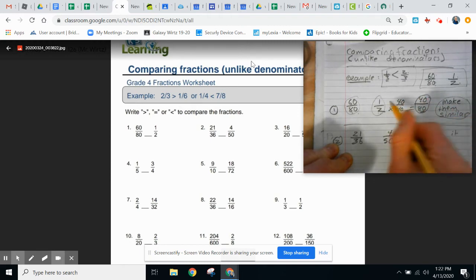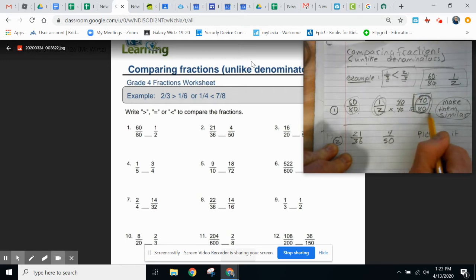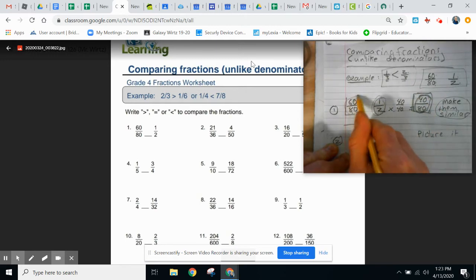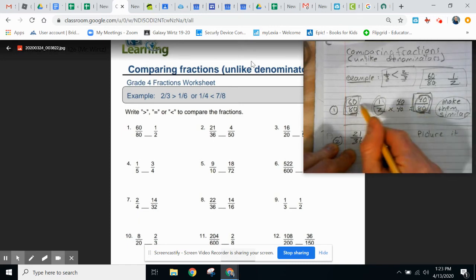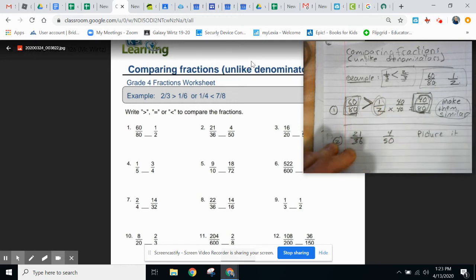This fraction is now equivalent to this one. So now we can compare 40/80 to 60/80 because they have similar or like denominators. 60/80 compared to 40/80? Well, 40 is less than 60. So you can do it that way.